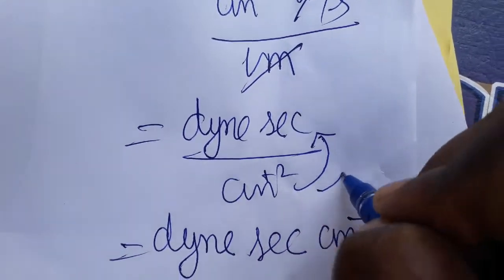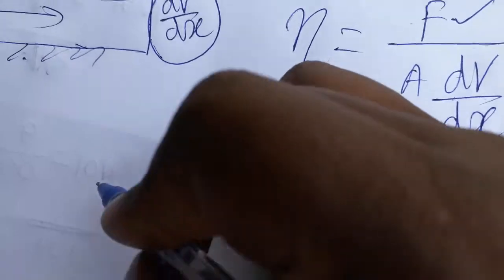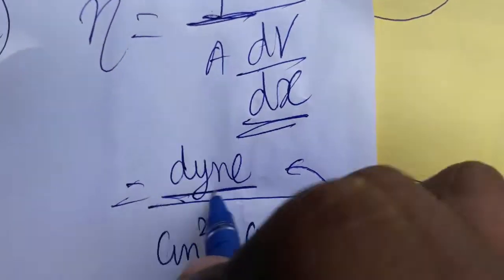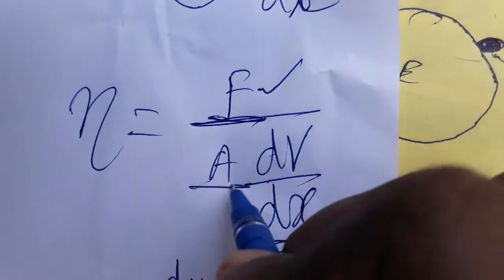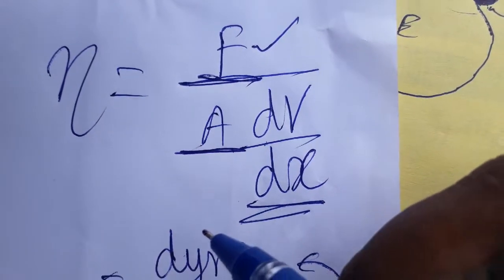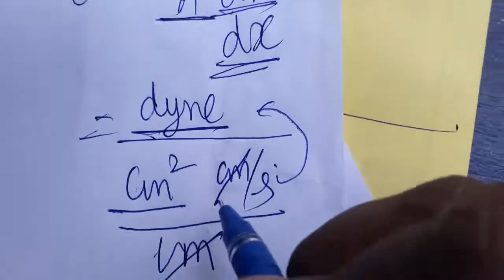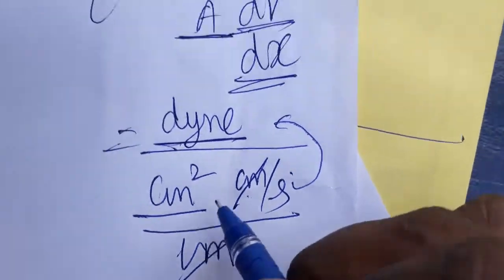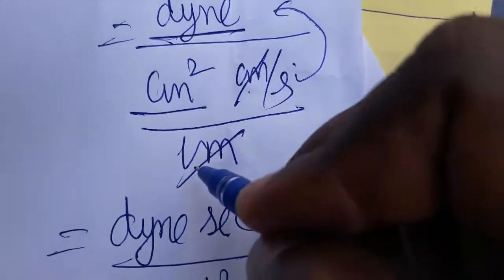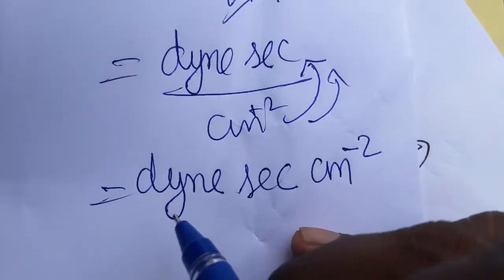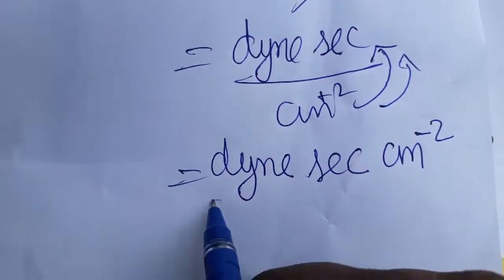We are fully following the CGS — centimeter, gram, second — system. Force's unit is dyne, area's unit is centimeter squared (length × breadth), velocity's unit is centimeter per second, and displacement's unit is centimeter. So the final unit of coefficient of viscosity is dyne·second·cm⁻².